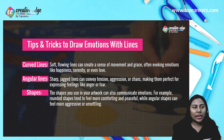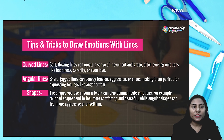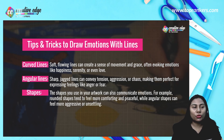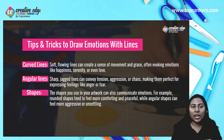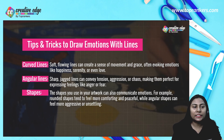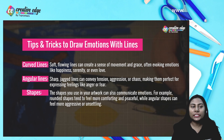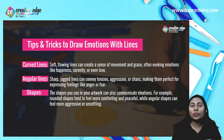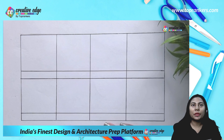Angular lines are sharp, jagged lines that can convey tension, aggression, or chaos, making them perfect for expressing feelings like anger or fear. The shapes you use in your artwork can also communicate emotion — rounded shapes tend to feel more comforting and peaceful, while angular shapes can feel more aggressive and unsettling.